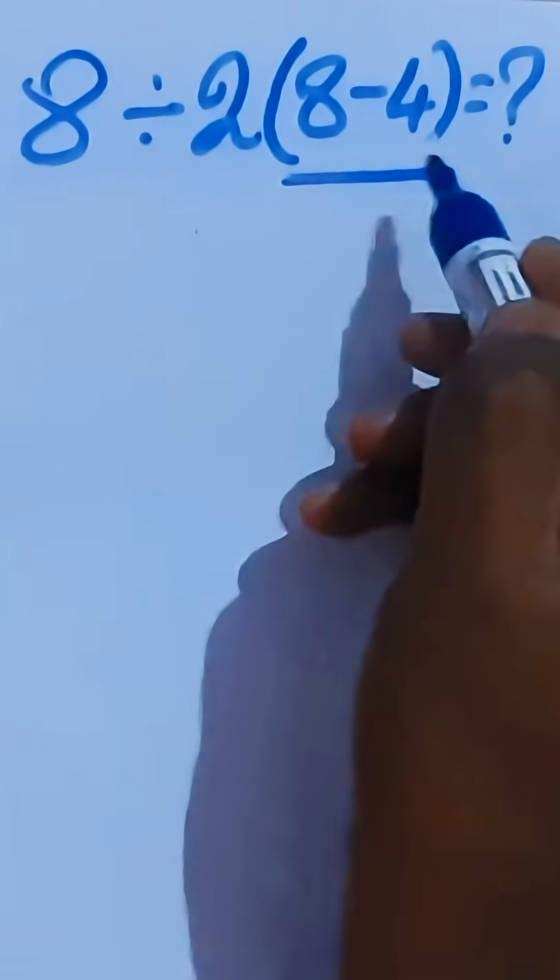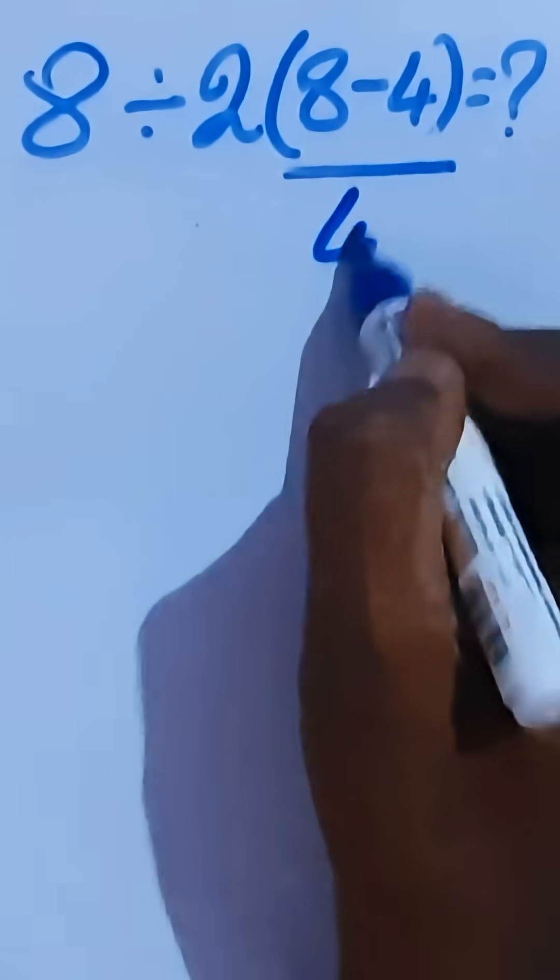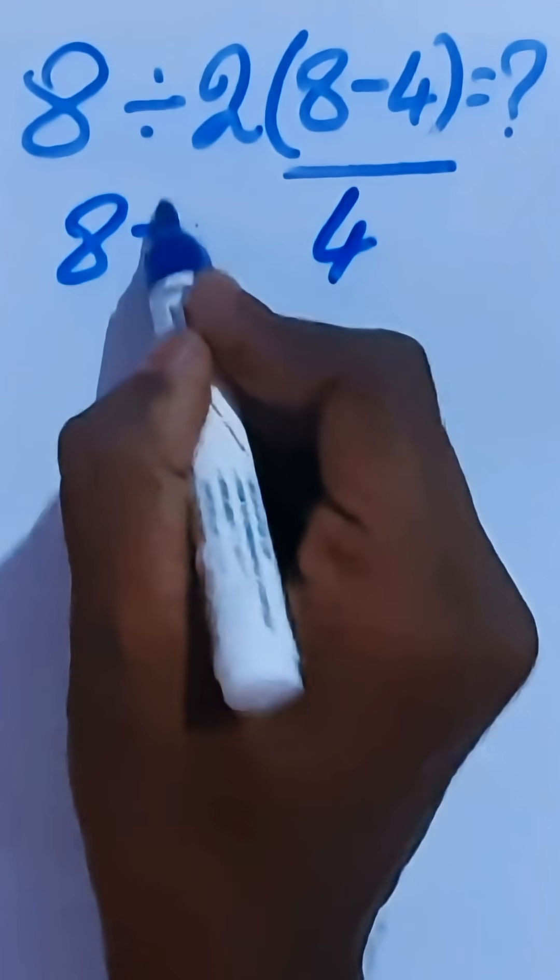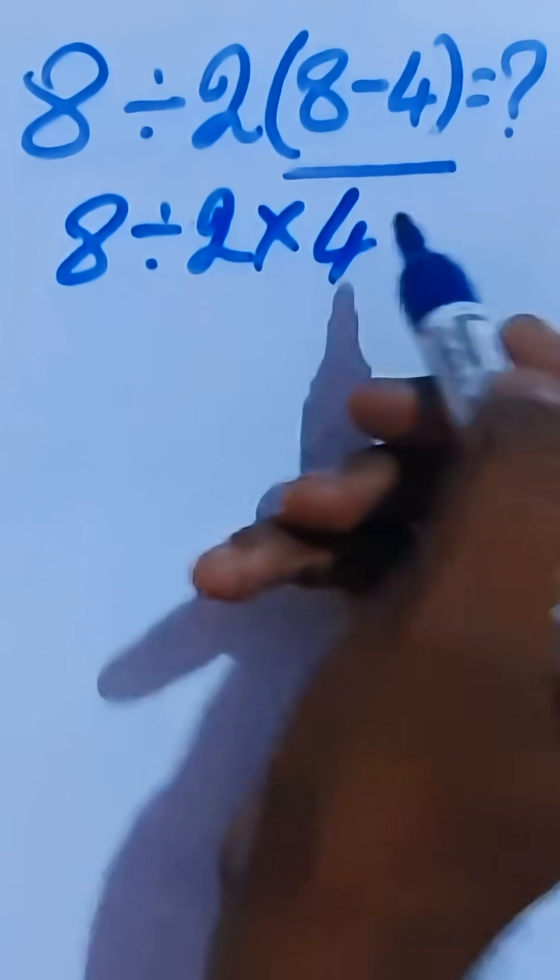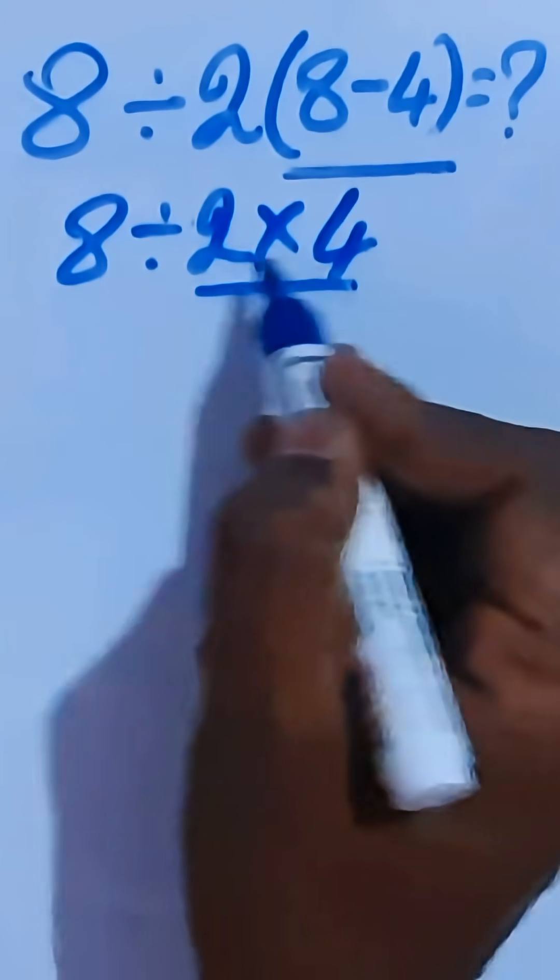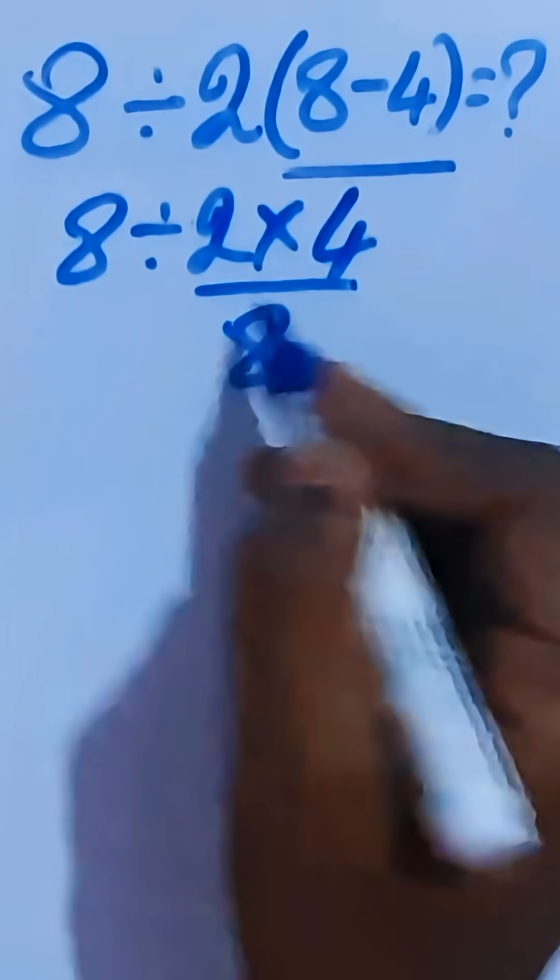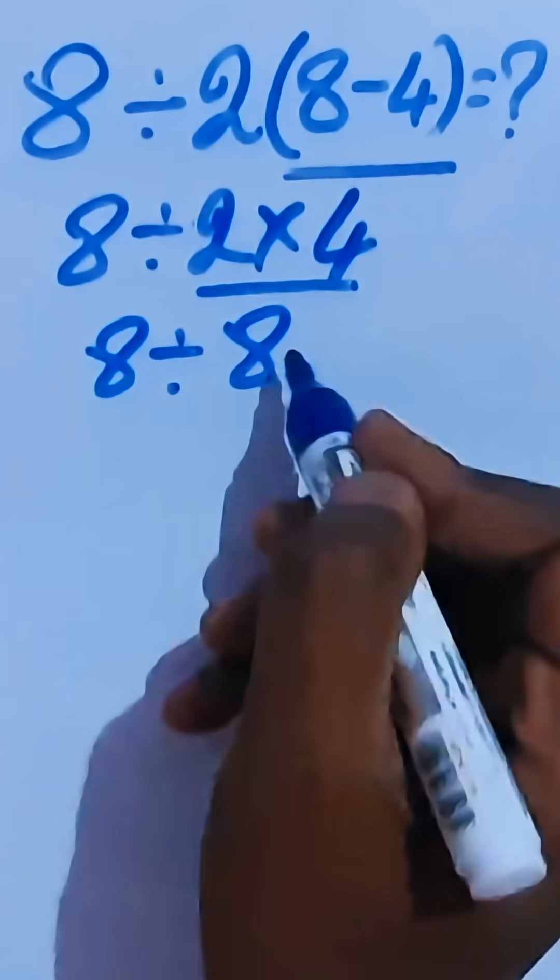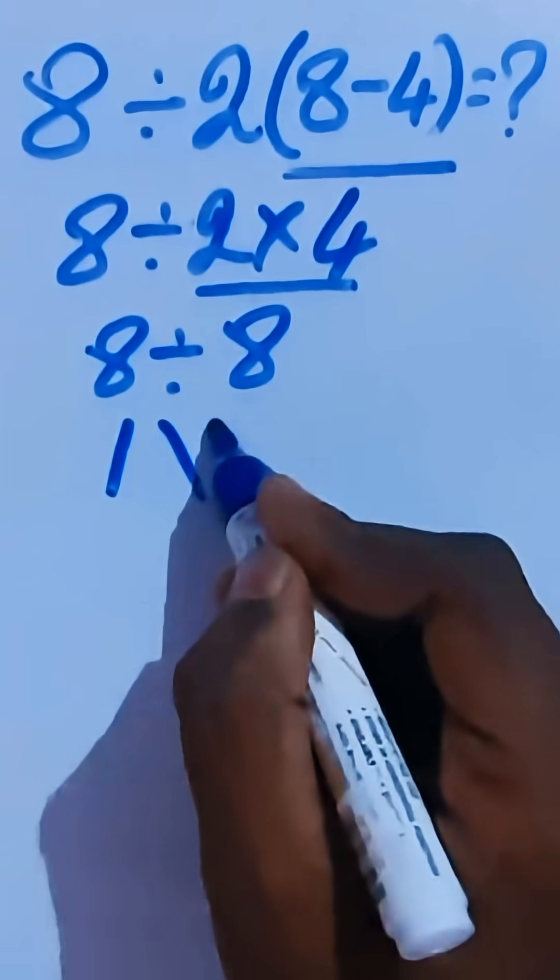Hi guys, first we're going to solve this. 8 minus 4 is 4. Here, 8 divided by 2 times this 4. Here we're going to solve this: 2 times 4 which is 8. Here, 8 divided by 8 is 1. This is wrong.